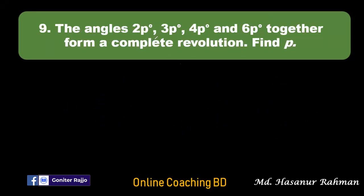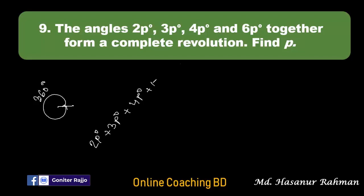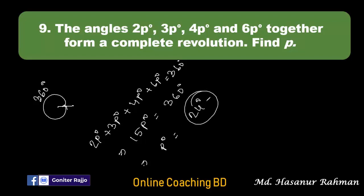Now number nine: the angles 2P degrees, 3P degrees, 4P degrees and 6P degrees together form a complete revolution. A complete revolution means 360 degrees. So the addition of these four angles is 360 degrees: 2P plus 3P plus 4P plus 6P equals 15P degrees equal to 360 degrees. Dividing by 15, P equals 24 degrees.